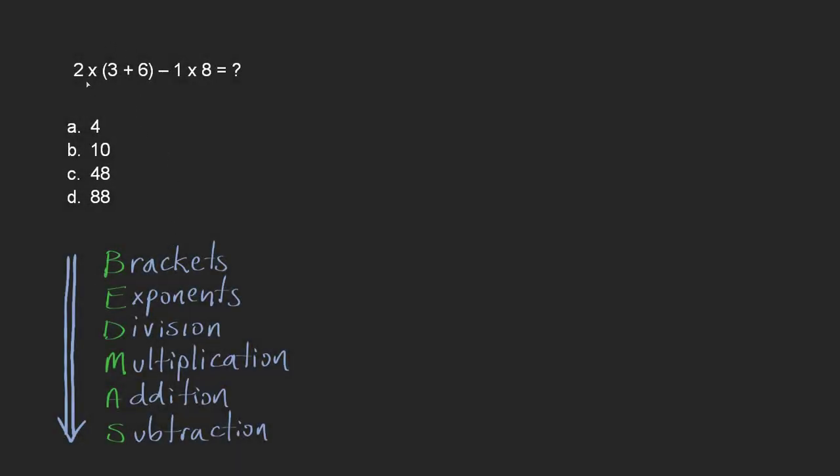Here we're asked to solve 2 multiplied by brackets containing 3 added to 6, and then we subtract 1 multiplied by 8. So the first thing we have to deal with are the brackets.